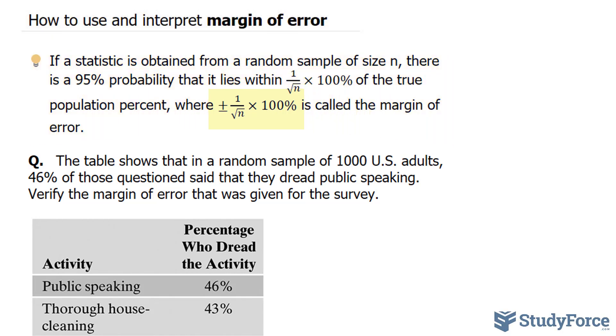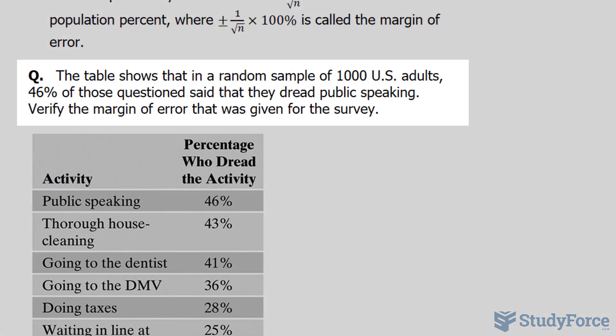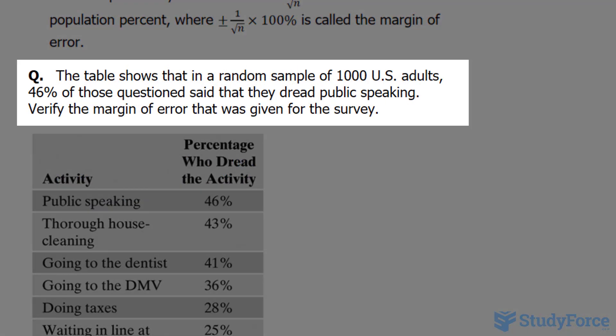Where plus or minus 1 over the square root of n times 100 is called the margin of error. With that being said, the question we're focusing on reads: the table shows that in a random sample of 1,000 U.S. adults.